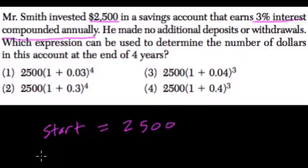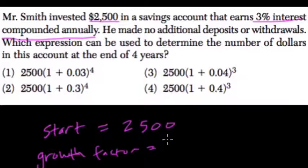So our growth, because the value of the money is growing, it's called the growth factor. What you can do quickly is take 1 and add the decimal of your percent. So 0.03 is 3% and your growth factor is 1.03.